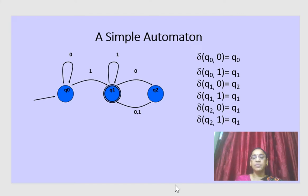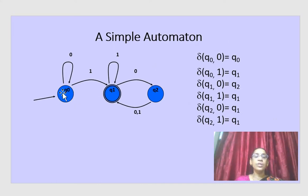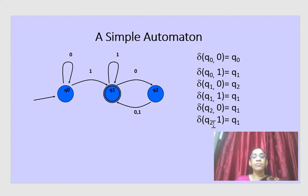Now take this transition. Here instead of q1, q0 is the starting state and q1 is the final state, with states q0, q1, q2. We can also write the transitions using delta notation: delta(q0, 0) = q0; delta(q0, 1) = q1; delta(q1, 0) = q2; delta(q1, 1) = q1 (returns to same state); delta(q2, 0) = q1; delta(q2, 1) = q1.